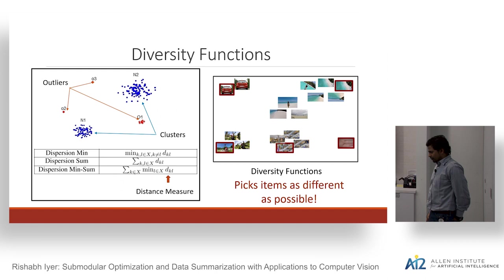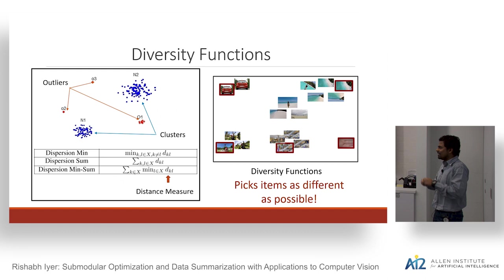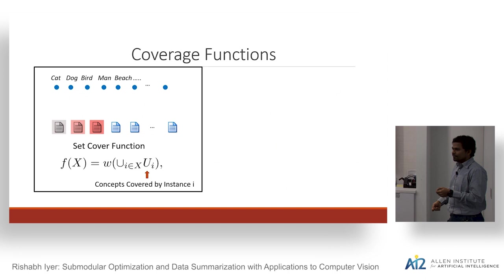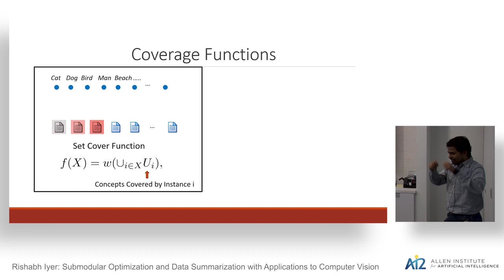Coverage functions allow you to explicitly call out coverage in terms of certain concepts. You can think of representation functions as maximizing coverage in terms of the space of points. Coverage functions allow us to explicitly define a set of concepts we want to cover — in that sense they are somewhat different from representation functions, though representation functions can also be thought of as getting coverage of the set of points you want to select from.